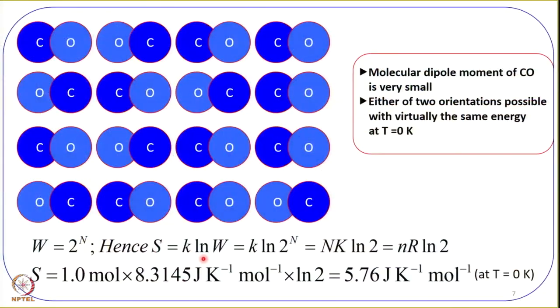To summarize: S equals k·log W can be used to calculate the entropy of a system, provided we know the weight of the most probable configuration. We have now connected S with W. In the next lecture, we will connect entropy with the molecular partition function.